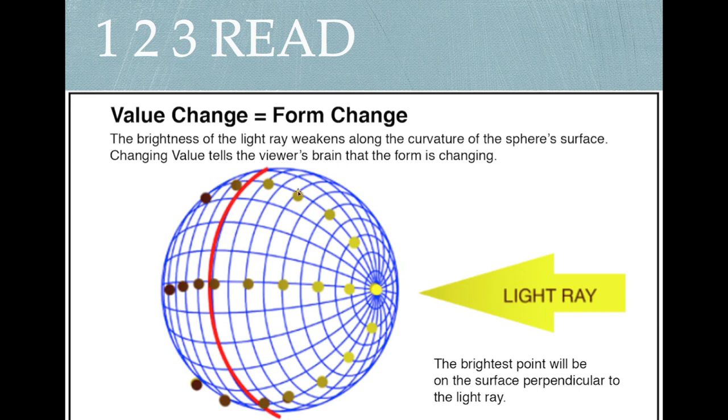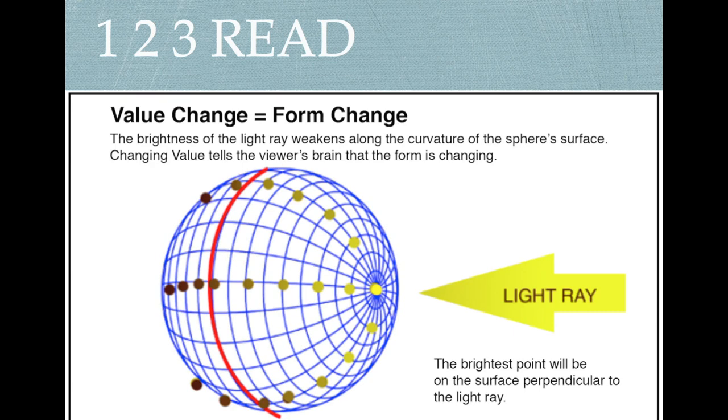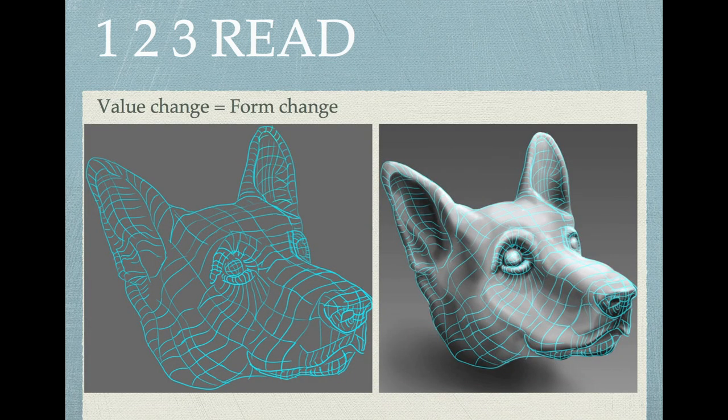So when you change the value of a form, you're telling the viewer's brain that the form is changing. This can be applied to simple spheres or even very complex shapes, just like this German Shepherd. You don't need to have a photo reference. If you have, like, this grid in your mind of where the form is flat and where it turns and where it pops out and sinks in,